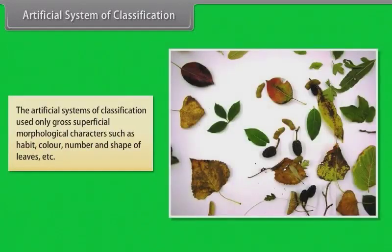The artificial systems of classification used only gross superficial morphological characters such as habit, color, number, and shape of leaves.